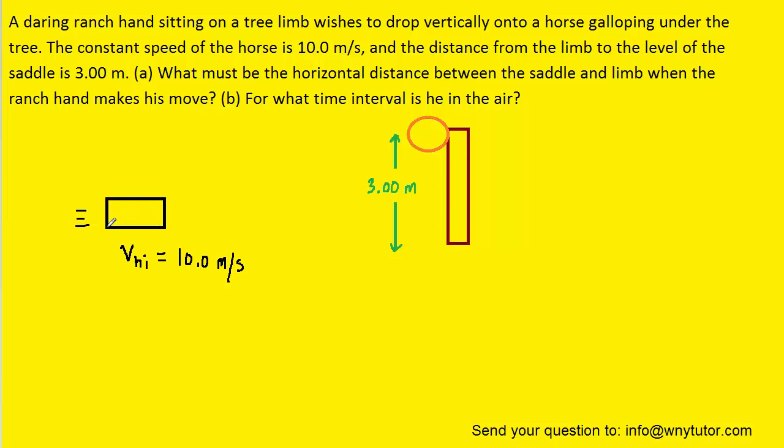So here we have the horse represented by a rectangle and it's galloping to the right with an initial velocity of 10 meters per second. We then have the daring ranch hand up at the top of the tree and he's going to let go and fall straight down a distance of 3 meters.